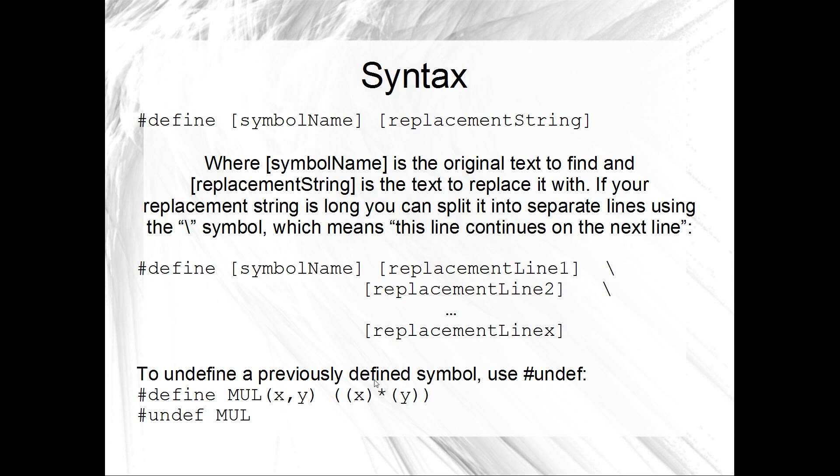Okay, so the other thing that you might want to do is undefine a symbol once you've defined it. If you want to undefine a symbol, you just go pound undef, and then whatever your symbol name is. So just here I've defined a little macro. Don't worry about that. We'll look at that in a second, defining macros. But mull just here is a macro symbol. So undef mull is going to, you know, remove from the preprocessor's, you know, swapping tree or whatever it is. It's going to remove mull from that so that the preprocessor from then on stops swapping mulls for whatever the replacement string was.